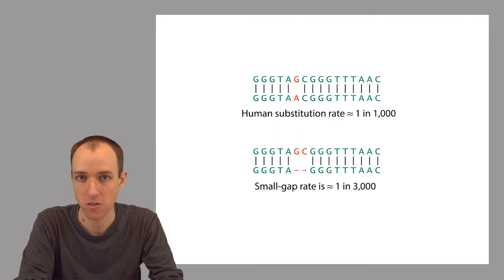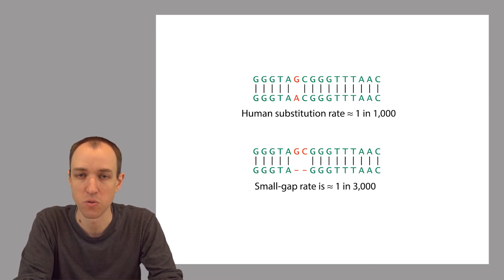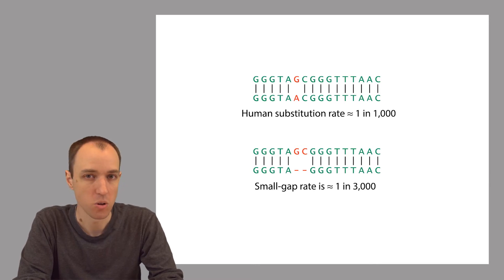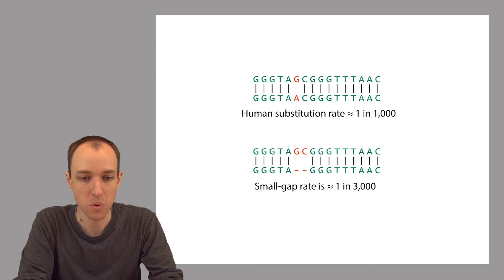Another example is small gaps — small insertions and deletions in the genome. If you take the genomes of two unrelated humans and count up how many differences are substitutions versus how many are small insertions or deletions of just a few bases, you find that the substitution rate is something like one in a thousand bases, whereas the indel rate — indel meaning insertions and deletions — is something like one in three thousand bases. So indels are less frequent than substitutions, and we might want to penalize indels more. We want to move beyond edit distance and instead assign different penalties to different kinds of mutations.